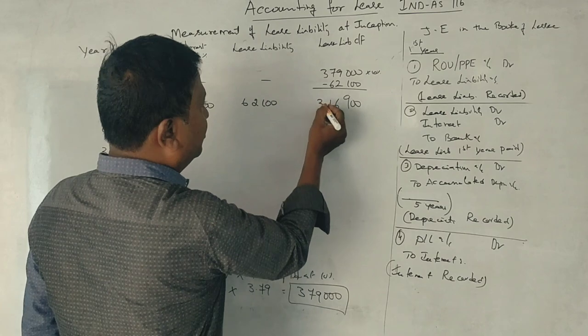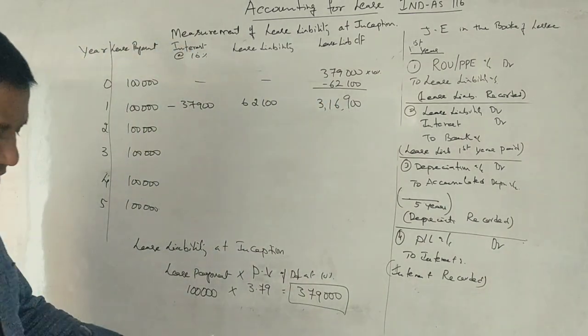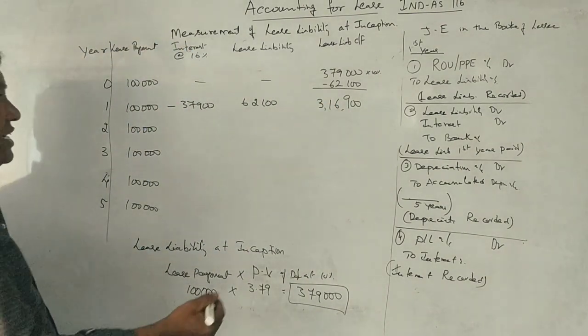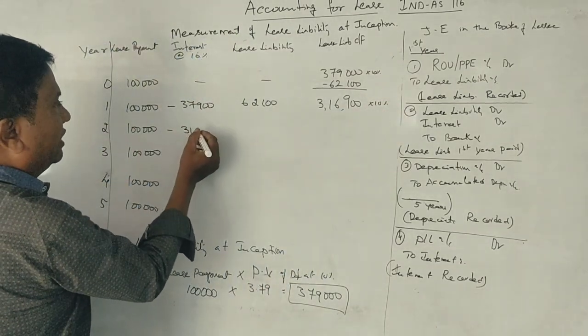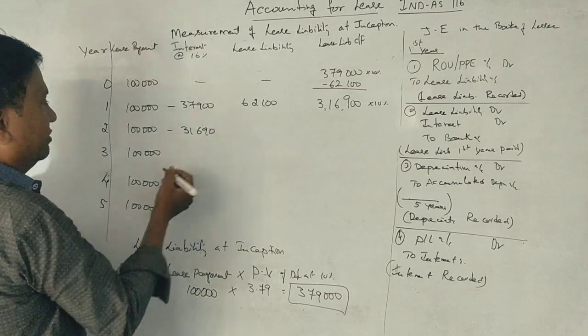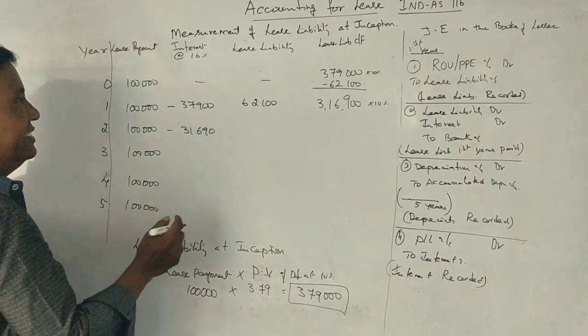This amount is 8 minus 2 is 6, 7 minus 6, 3,16,900 rupees. This amount is 10% per year, this amount is 31,690 rupees.